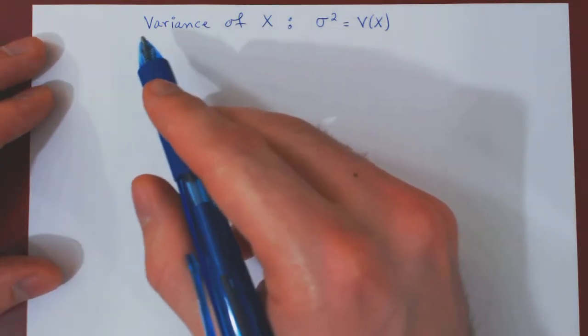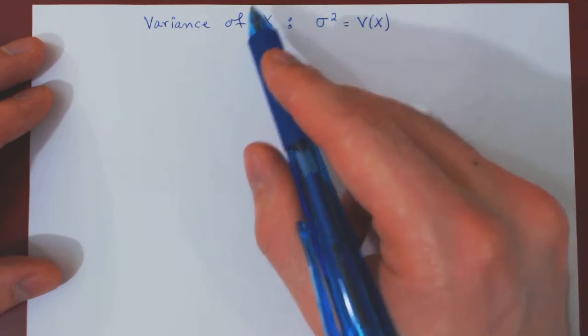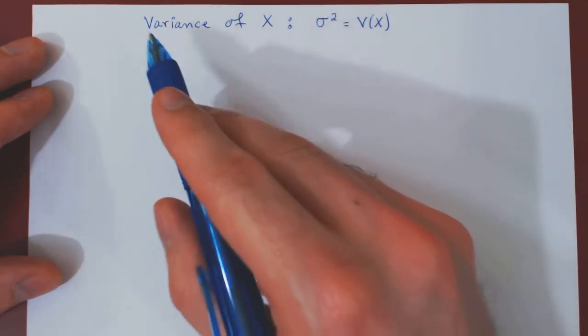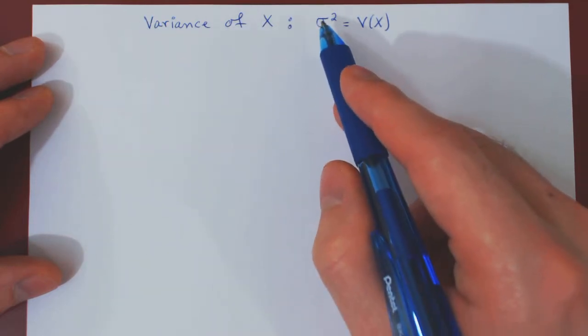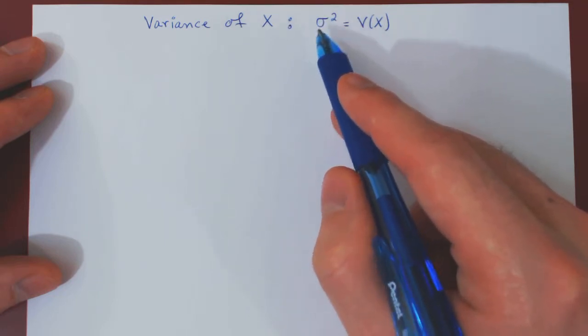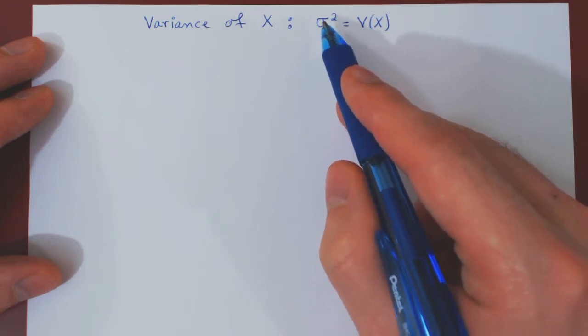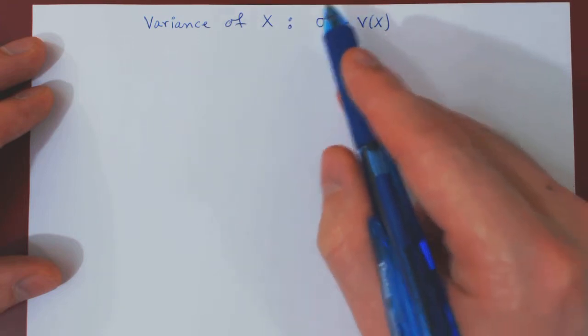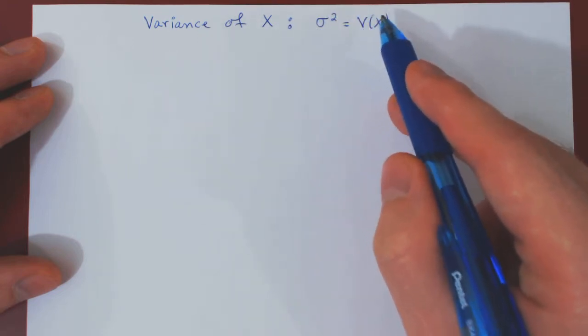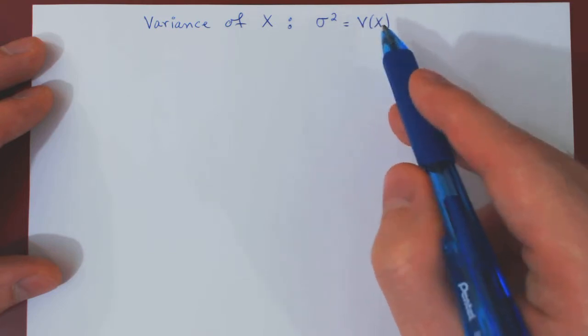In this video, you will see how we can find the variance of a continuous random variable X. We denote the variance of X in two ways: by sigma squared (this symbol is sigma, a Greek symbol for S), or we can also denote the variance of X by V(X) for variance of X.